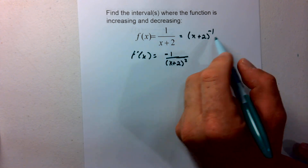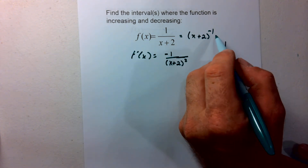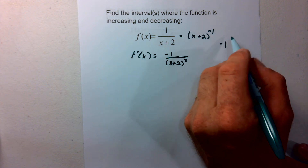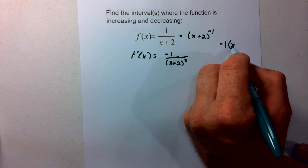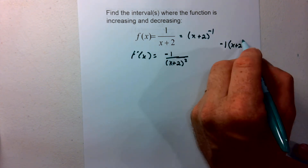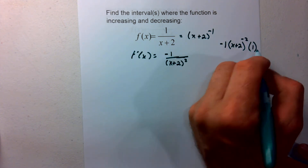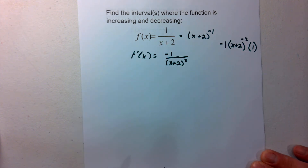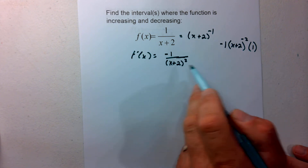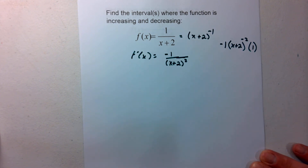Using the chain rule: negative 1 comes to the front, (x+2) stays the same with the exponent decreased by 1 to negative 2, times the derivative of the inside which is 1. The negative exponent goes to the bottom, giving us negative 1 over (x+2) squared.